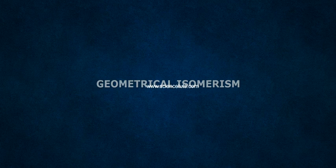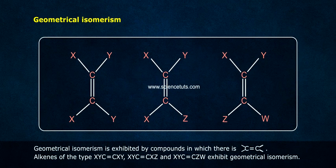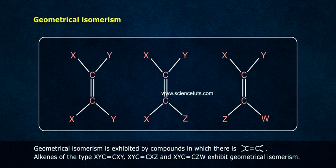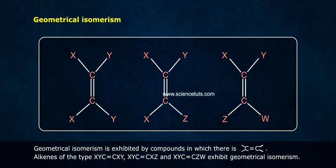Geometrical isomerism is exhibited by compounds in which there is C=C. Alkenes of the type XYC=CXY, XYC=CXZ and XYC=CZW exhibit geometrical isomerism.